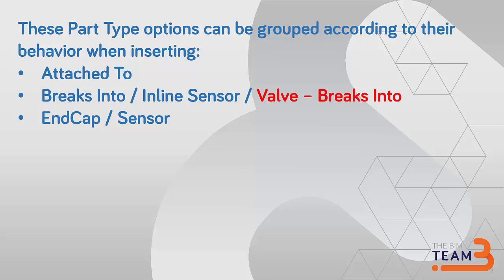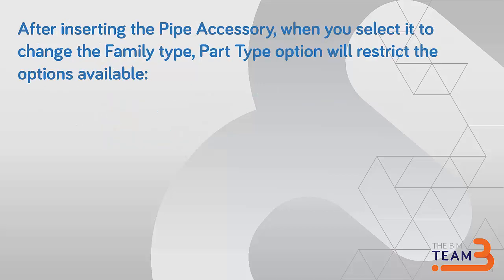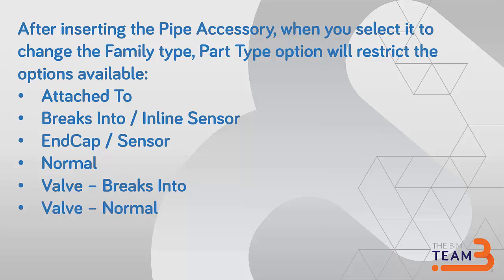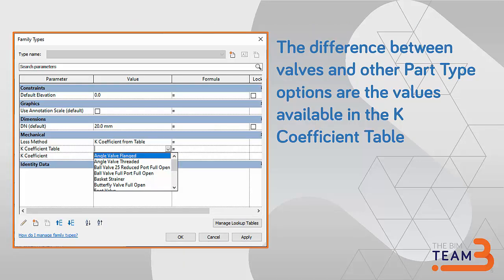The way to create a family is exactly the same within each of these groups, and normal and valve normal are the fourth type. After you insert the family in the project, when you select and want to change the part type, they will be grouped in six different sets: attach-to, breaks-into, inline sensor, end cap and sensor, normal, valve breaks-into, and valve normal. So if you insert one family that's breaks-into, you can exchange it with an inline sensor but not with a valve breaks-into. Another difference when you have valves versus other parts is that in the K-coefficient table you have many more options.